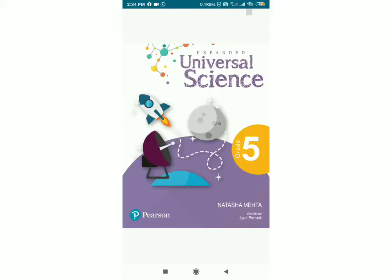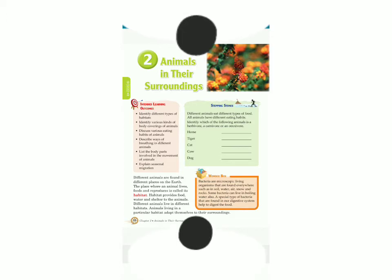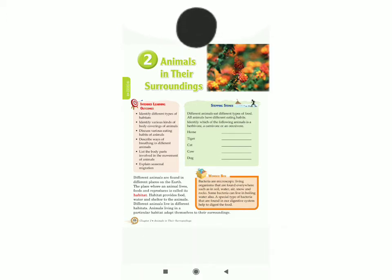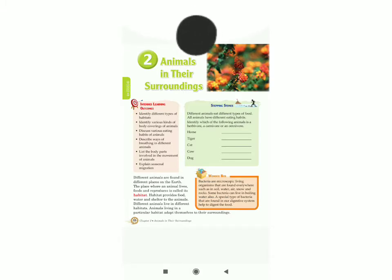Good morning children. This is your science book Universal Science. Welcome in today's session. Today we are going to study lesson number 2: Animals in their surroundings. In this lesson we will be able to identify different types of habitats, various kinds of body coverings of animals, and we will discuss the various eating habits of animals.